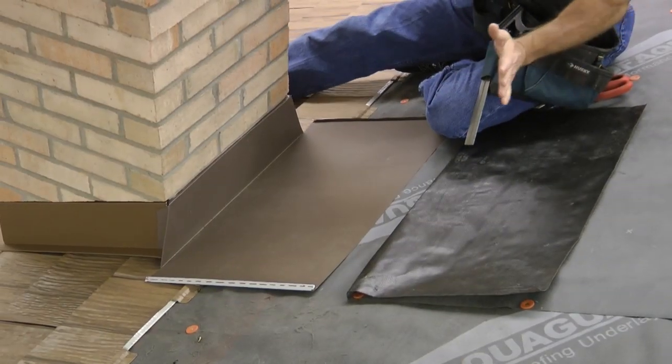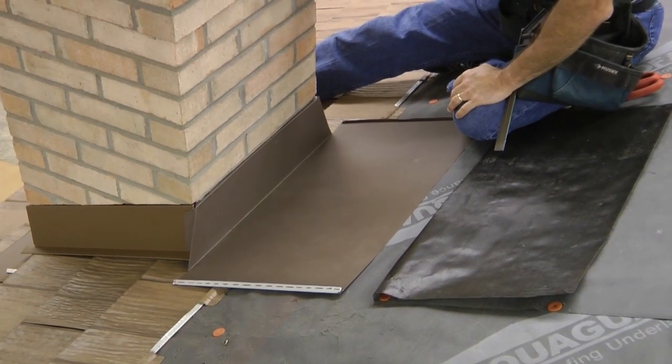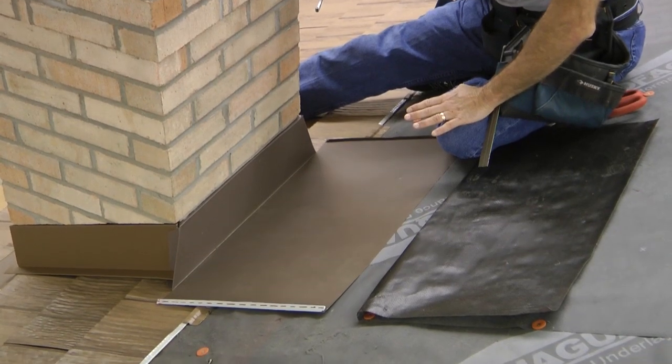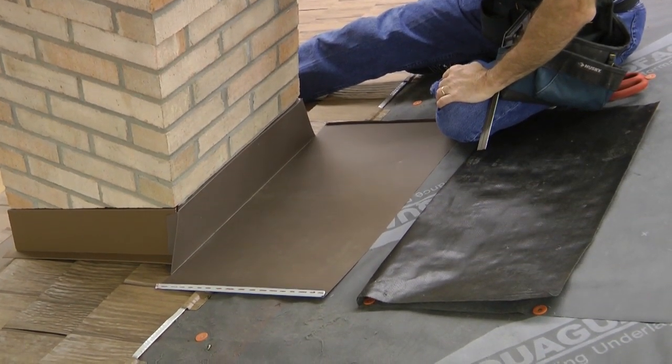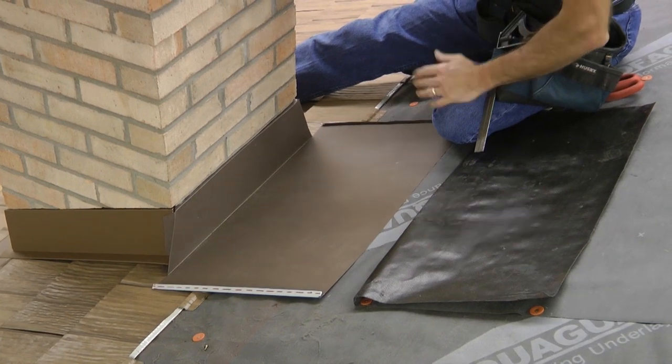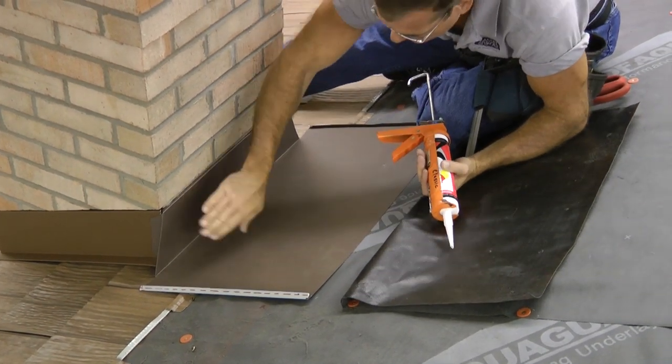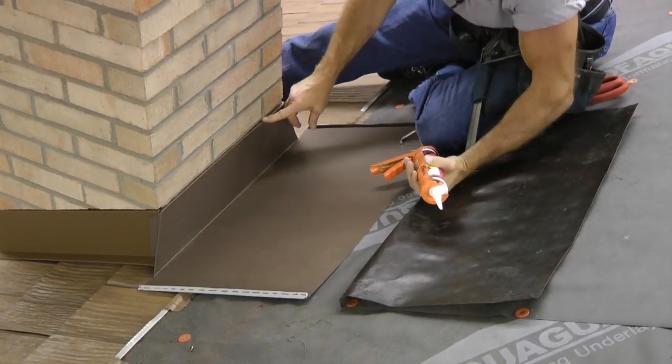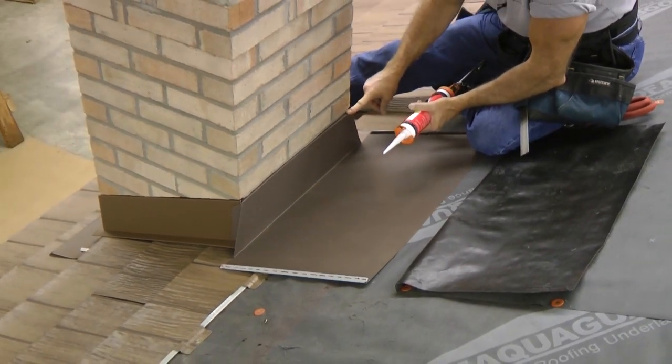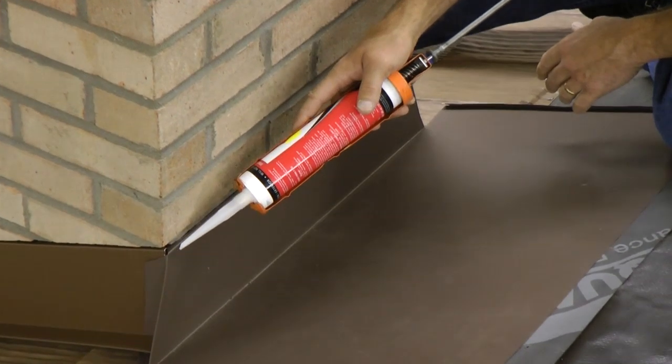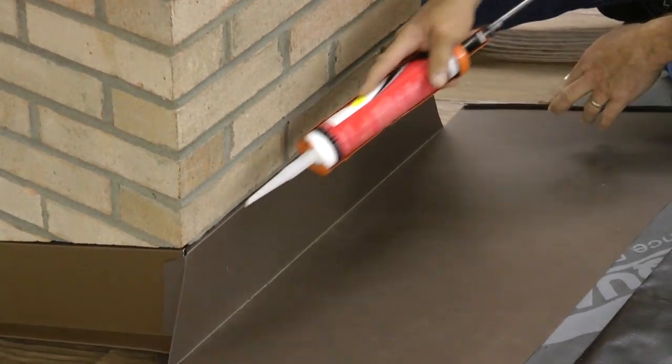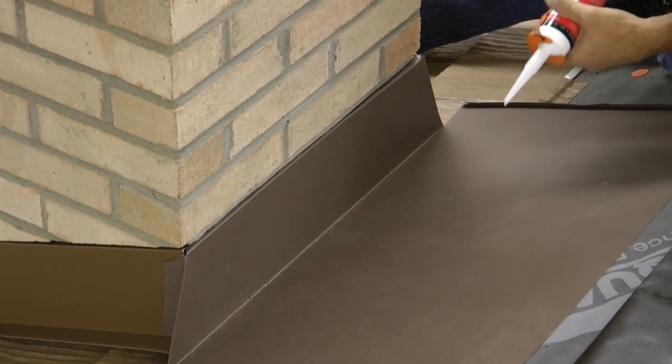I want you to notice how this flashing is formed before I actually show you the bend lines on a piece of coil stock. You notice that we've got it firmly seated into the kerf and again we're going to put sealant in the kerf first and then after putting the flashing in place come back and seal again on top.